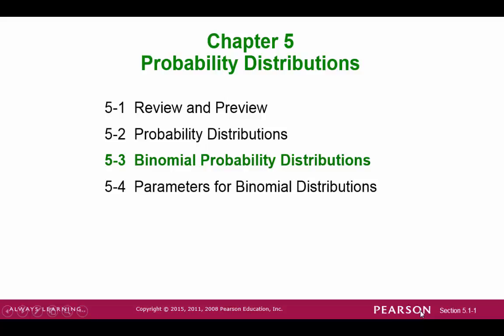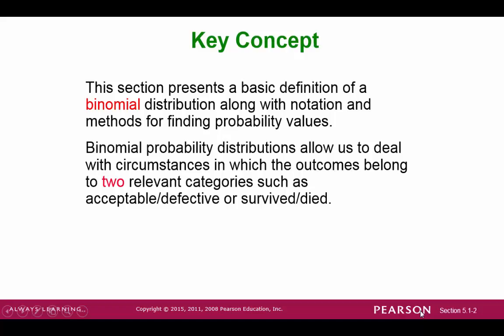Section 5-3 Binomial Distributions. The main idea here is to highlight a special discrete probability distribution called the binomial distribution. The key feature of these distributions is to be able to deal with scenarios where outcomes are limited to two categories.